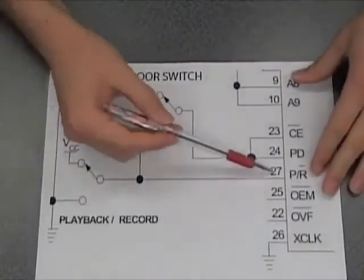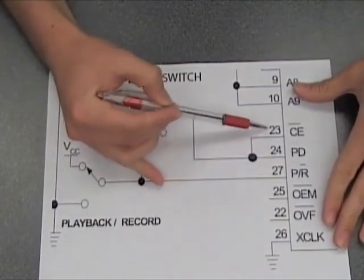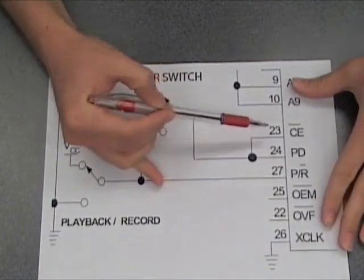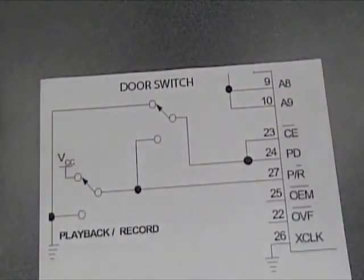So when playback record is low, all three are low. This puts the chip in record mode. It doesn't reset and it starts recording. Once you flip it back, the recording stops right away. That's what the chip does.